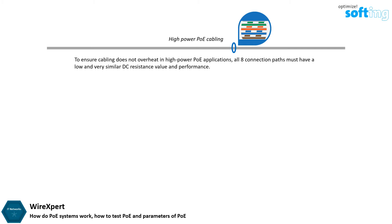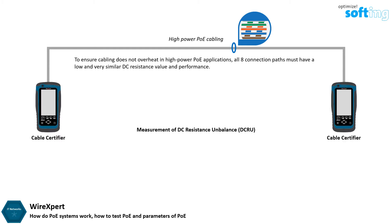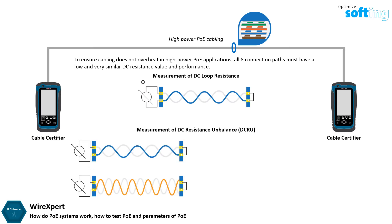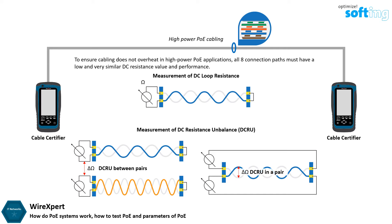There are typically two types of PoE test. The first type is the measurement of DC resistance unbalance using a cable certifier. During a cable certification test, DC loop resistance is measured. To ensure the cabling installed is PoE compliant, measurements of DC resistance unbalance between pairs and DC resistance unbalance within a pair are also required. A cable certifier measures various parameters in accordance with industrial cabling standards such as TIA and ISO.